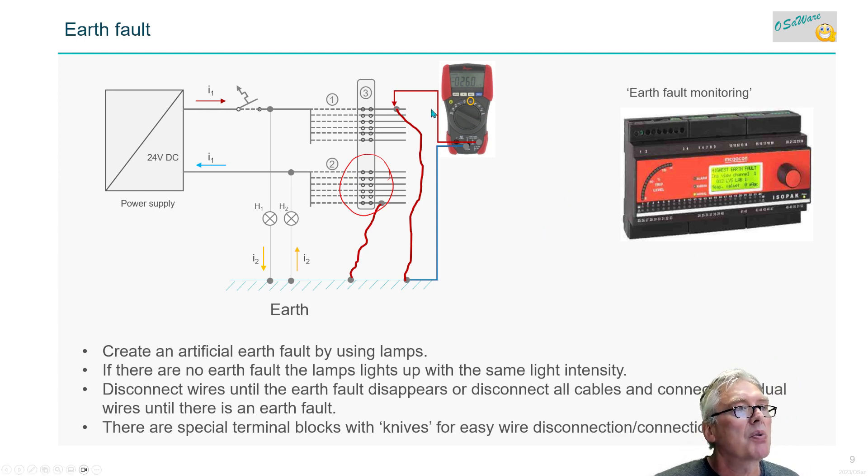You can use two lamps. If there's no earth fault in a 24-volt circuit, you should have 12 volts here, 12 volts here, and they should light with equal strength, same intensity. Then you can disconnect all wires and reconnect and disconnect one wire until the lamps start to glow with equal intensity. Then you have located your faulty wire.